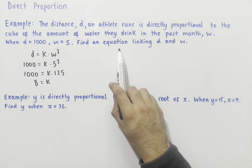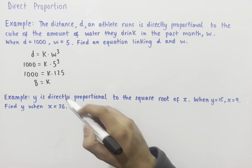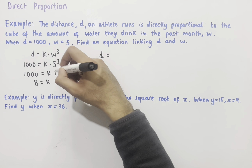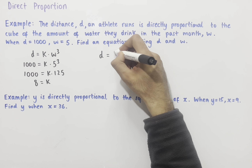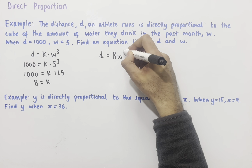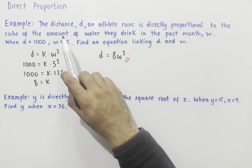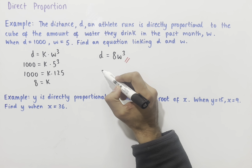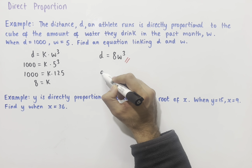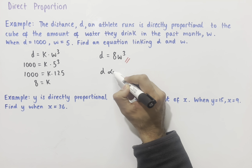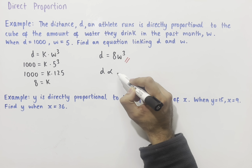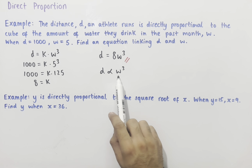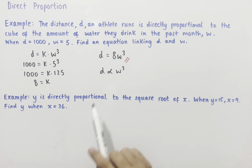So the equation linking d and w is d equals 8w cubed. To show that d and w cubed are directly proportional, we can also write the proportional relationship using the proportionality symbol: d is proportional to w cubed. This tells us that d and w cubed are proportional to each other.